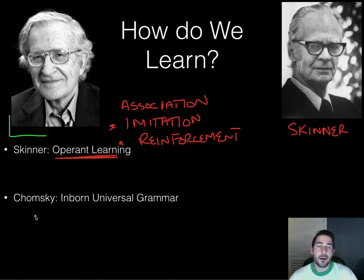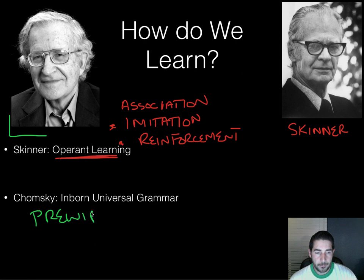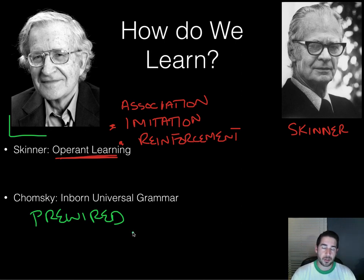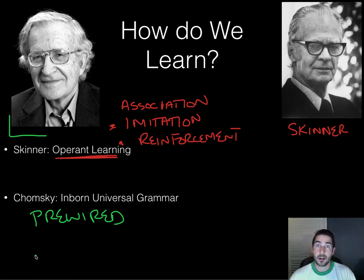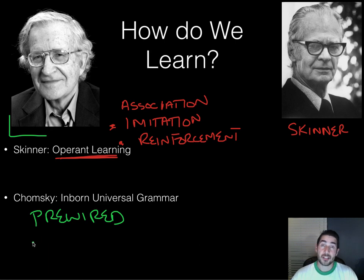Noam Chomsky, a major figure in cognitive psychology, argued that we are pre-wired and have a universal language acquisition device built into our brains. One reason Chomsky believed this is that children overgeneralize grammar rules — for example, saying 'I ranned to the store' instead of 'ran,' or adding extra 'ed' endings that they never heard at home. This suggests an innate grasp of grammatical rules.